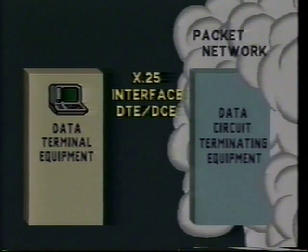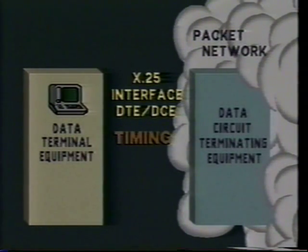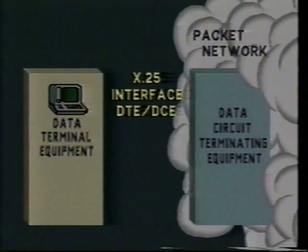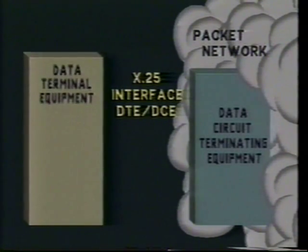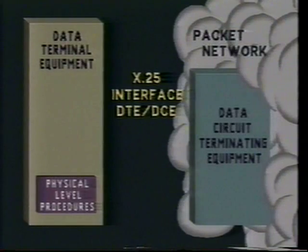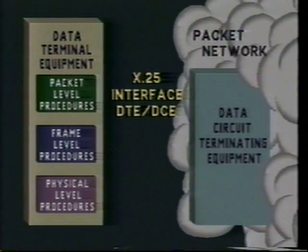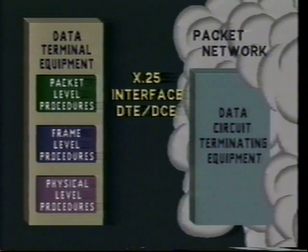Governing the interface between an X.25-speaking DTE and an X.25-speaking DCE, the X.25 protocol regulates the format, meaning, and timing of all information exchanged across the access link. Corresponding to the protocol hierarchy established by the International Standards Organization, X.25 has three distinct levels: the physical level, the link control or frame level, and the packet level. Each level functions independently, and modifications made on one level will not affect the operations of another.